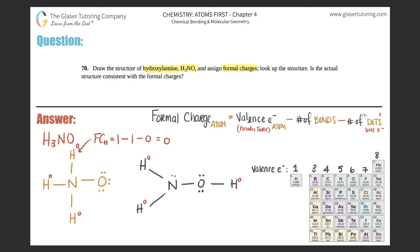Now let's look at this nitrogen, which is different from the other nitrogen. This one has four bonds — one, two, three, four — so we need to do the formal charge for both. Formal charge of nitrogen: nitrogen has five valence electrons, so we start with five, minus four bonds, minus zero dots surrounding it. Five minus four minus zero equals positive one. So this nitrogen has a plus one charge.